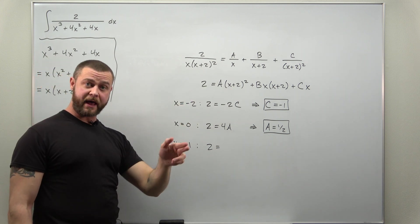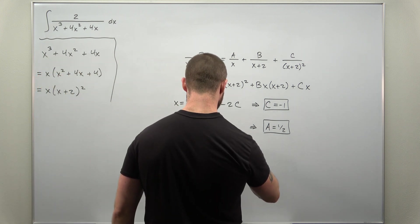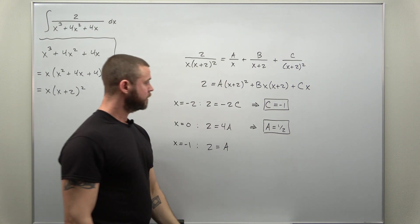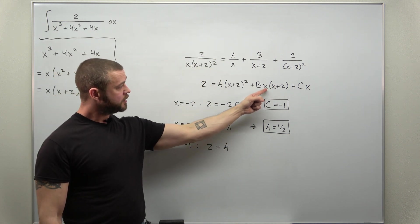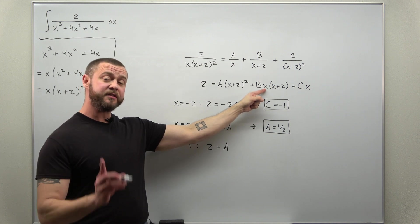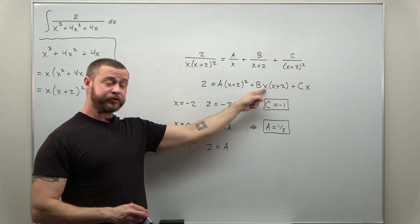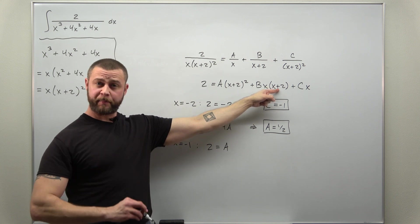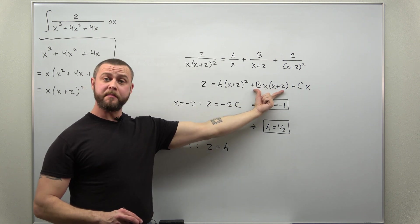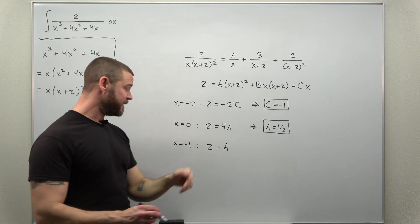When x is negative 1, this term just becomes 1a or a. Be careful with your signs. When x is negative 1, that factor of x in the middle, that gives you a factor of negative 1. And then negative 1 plus 2, positive 1. Looks like your middle term evaluates to negative b.